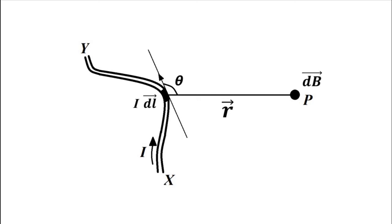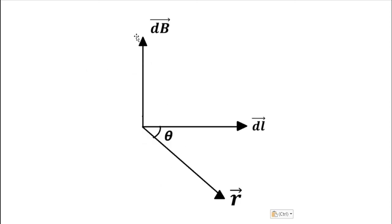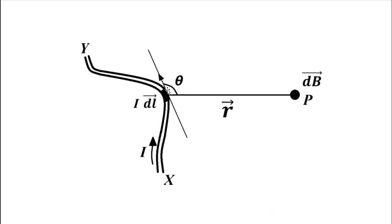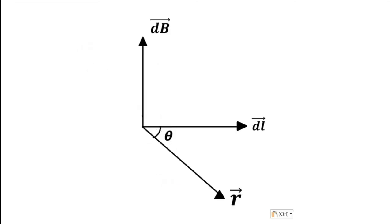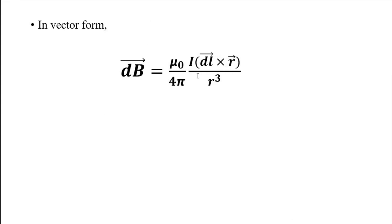As a result, the dB vector — the magnetic flux density vector — is perpendicular to the plane containing the r vector and the current element dl vector. The current element dl vector and the position vector r make an angle theta. Because the expression is in the form of the cross product of dl vector and r vector, dB vector is perpendicular to the plane containing dl vector and r vector.